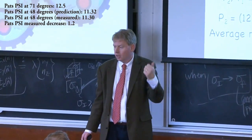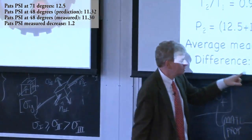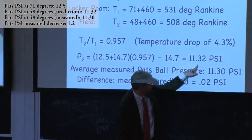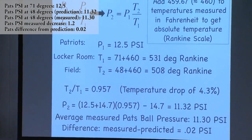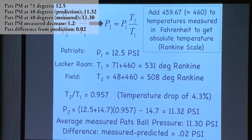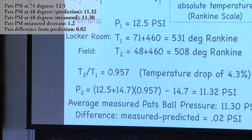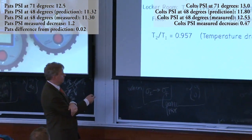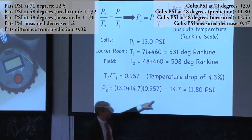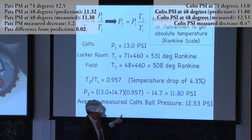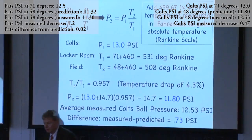Average Patriots measured ball pressure: 11.30. Predicted difference: 11.302 minus 11.30 equals 0.02 psi. You breathe on the football, you're going to change that much. How about the Colts? We predicted 11.8, but the measurements were 12.5, so the difference is 0.73 psi.